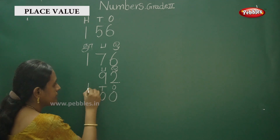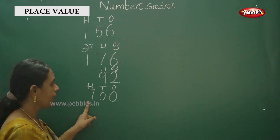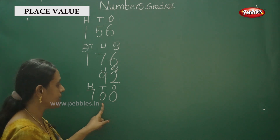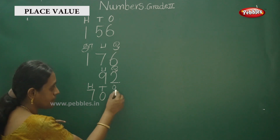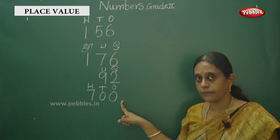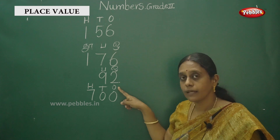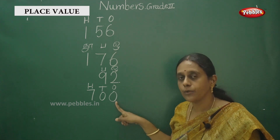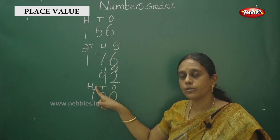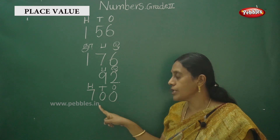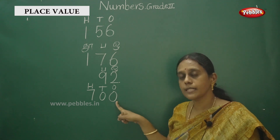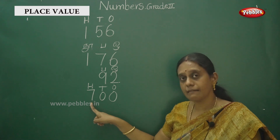The tens place line is zero, the ones place line is zero. This one is the alphabet O, and this one is the numeral zero. Observe the number and understand the concept — this one is the alphabet and this one is the numeral. This is seven hundred.